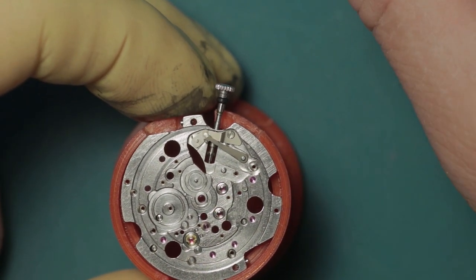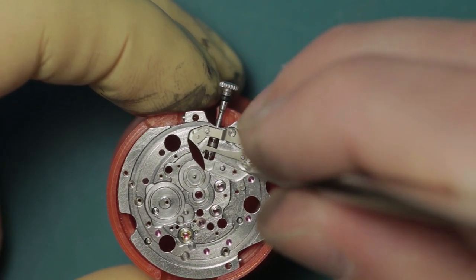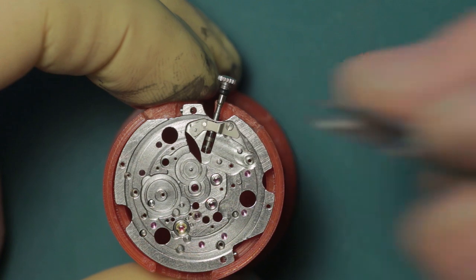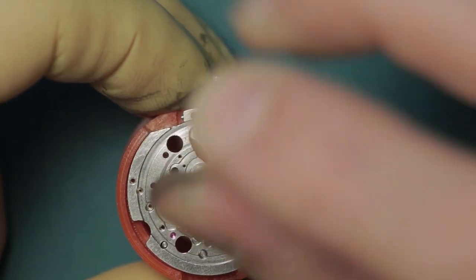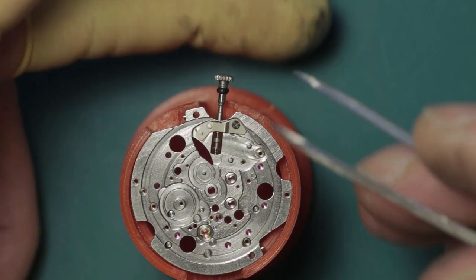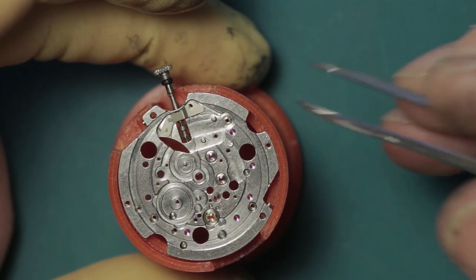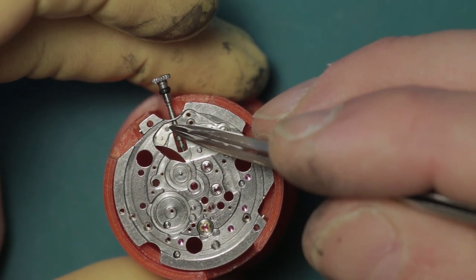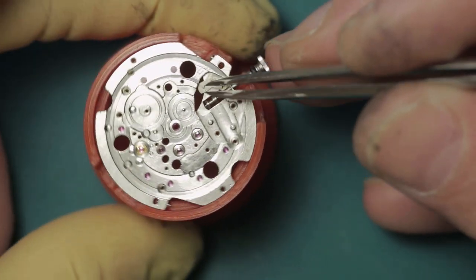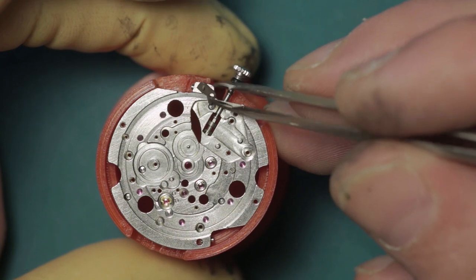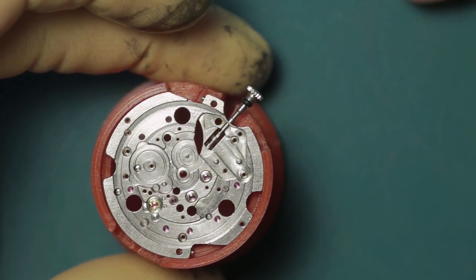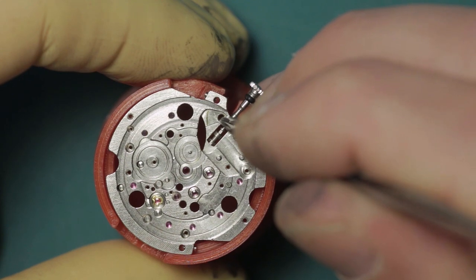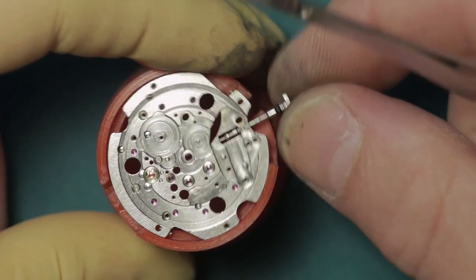And then we need to remove this screw just here. This retaining spring which is forked at the tip to go around the little pivot. The setting lever, like so. And I don't know if you notice there, but the setting lever release button just dropped through there.